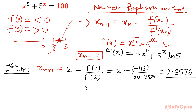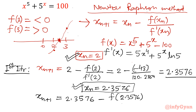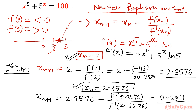For the next iteration, I will consider x_n equal to what we calculated: 2.3576. So x_(n+1) will be equal to 2.3576 minus f(2.3576) over f'(2.3576). Once you apply all the values and use the calculator, that value comes out as 2.2811. This is your second iteration.